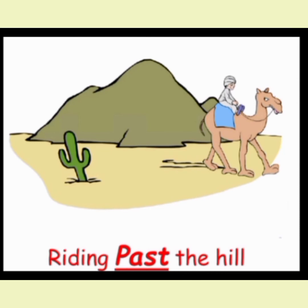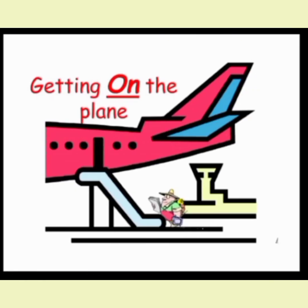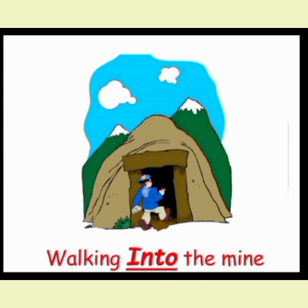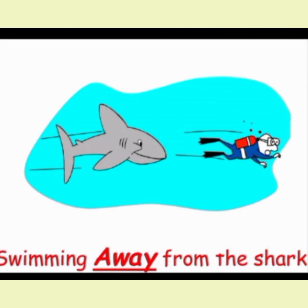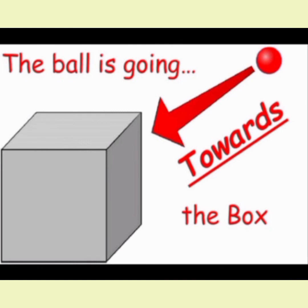Next: past. Riding past a hill — kuch cheez ko cross karna, that is the 'past' situation. Next: over. Swimming over the shark — over is used here. Next: on and off — getting on the plane, getting off the plane. Next: into — walking into the mine. Next: away from — swimming away from the shark — away is used in this form. Next: up — the ball is going up the stairs, one step up. Next: toward — the ball is going toward the box.